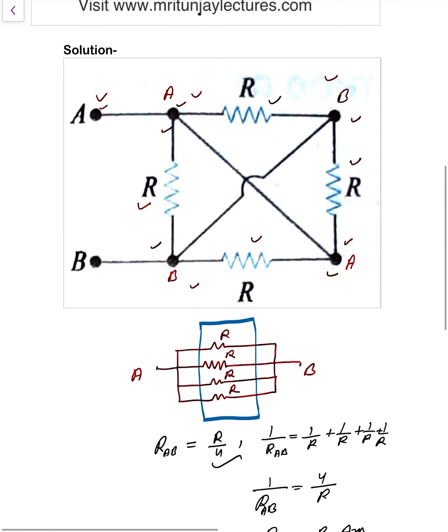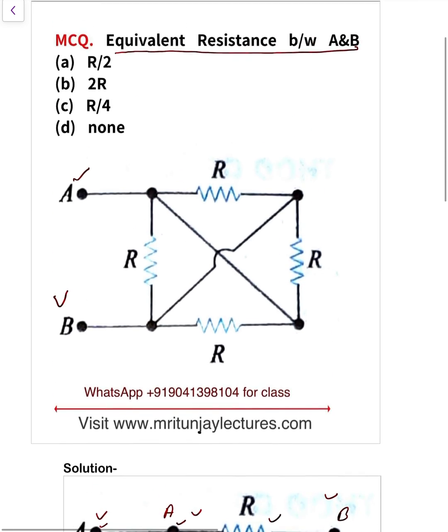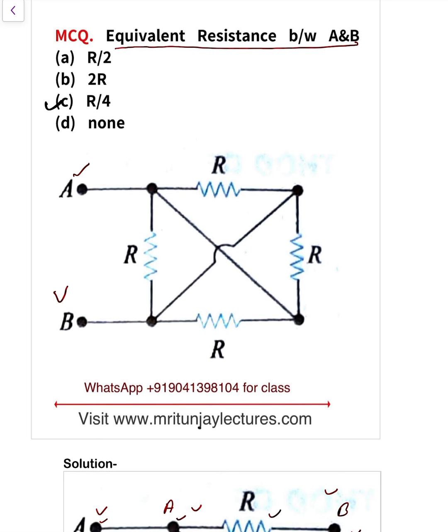So which option is correct? R by 4 is the right answer, so C option is the correct option. If you have any doubt then comment it, I will discuss again.